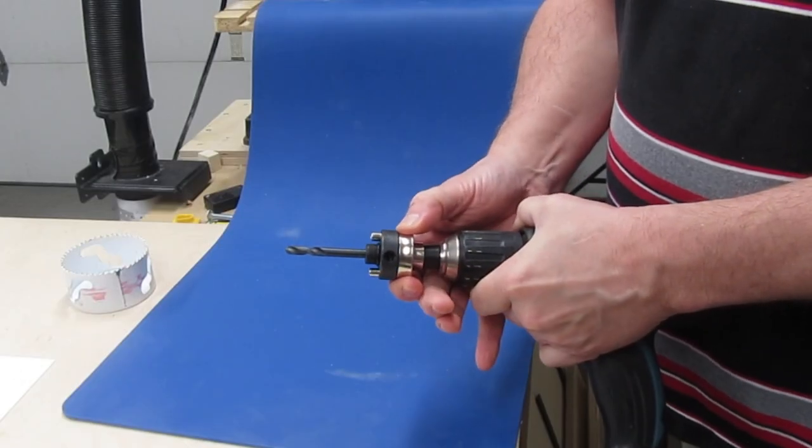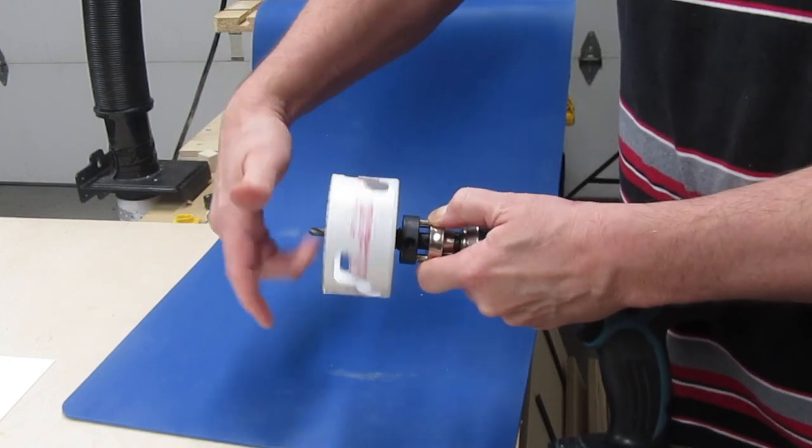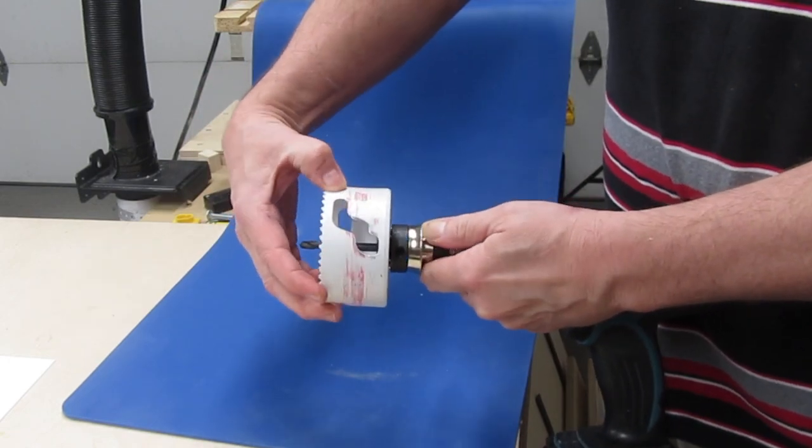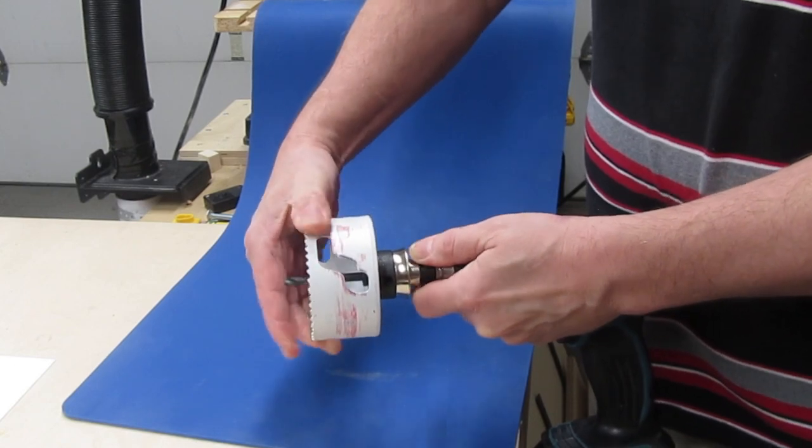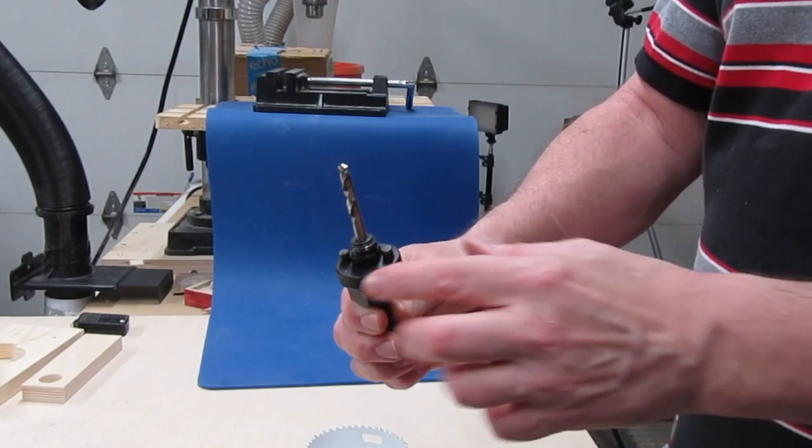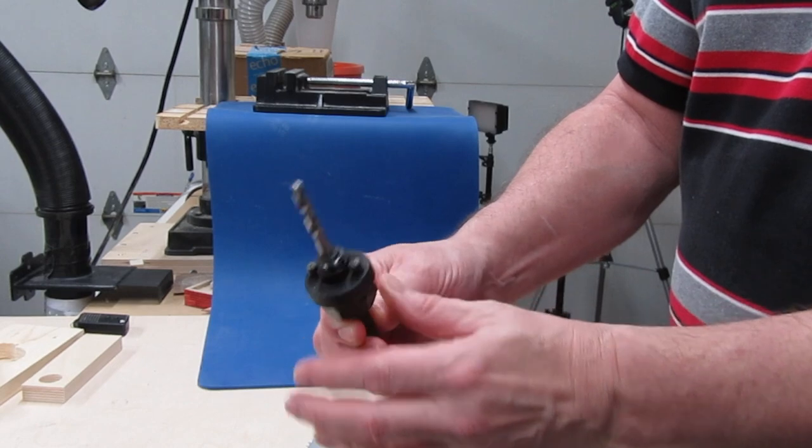I also bought this Dewalt mandrel, which is spring-loaded. Seemed like a good idea. However, sometimes this mandrel leaves the saw with too much play for my liking. So I'll stick with the Milwaukee mandrel, which really feels like a quality piece of manufacturing.